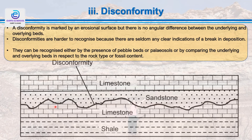Disconformity is marked by an erosional surface, but there is no angular difference between the underlying and overlying sequence of beds. The erosion may be indicated by the presence of pebbles, a boulder bed, or the development of a layer of old soil called a paleosol. Disconformities are harder to recognize; they can be identified either by the presence of pebbles or paleosols, or by comparing the underlying and overlying beds with respect to rock type and their fossil contents.